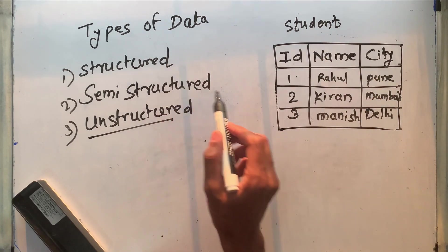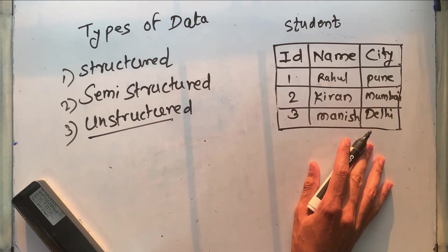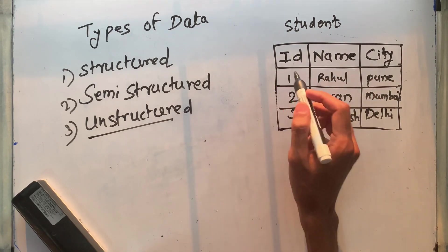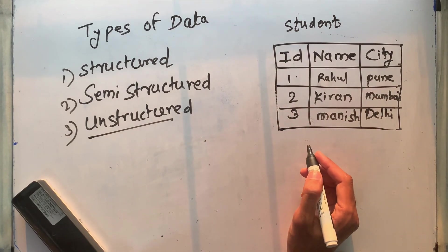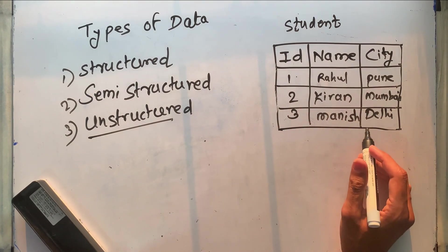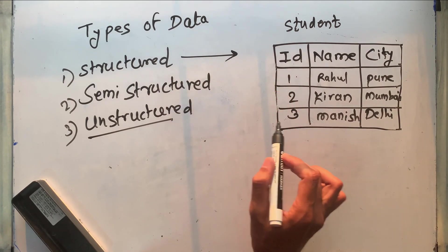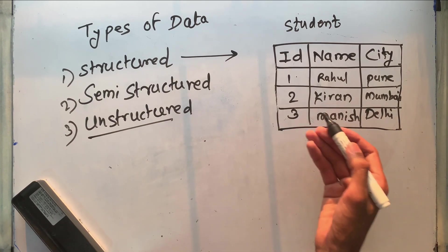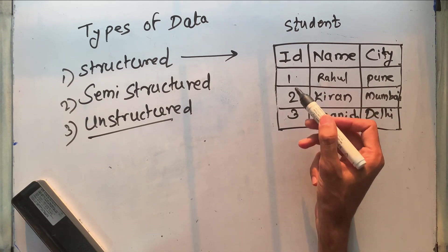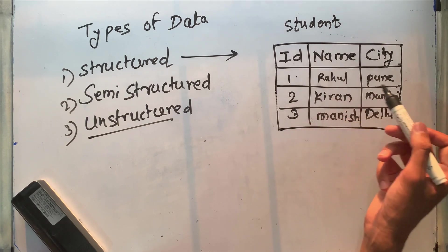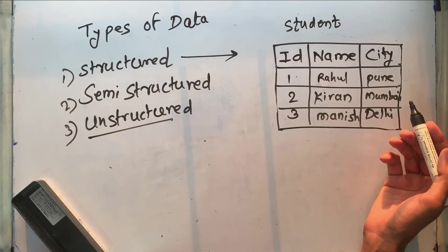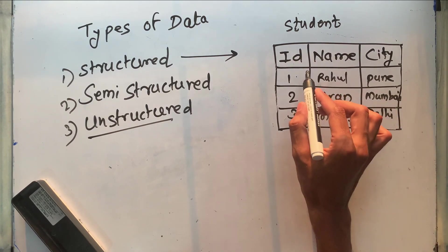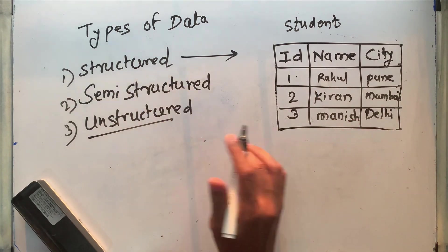Suppose there is a student table and another department table — they are connected to each other and form an RDBMS, a Relational Database Management System. We can save different types of data, but the structure is fixed. This is what we call structured data.